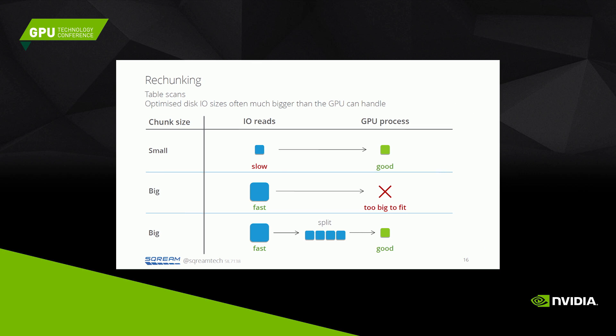We can also adjust chunk size in other ways. When reading data from disk, a chunk size that fits on the GPU will run well on the GPU but poorly on the hard disk because we're doing small reads. If we use a chunk size optimized for the hard disk, those chunks won't fit on the GPU. So we read the big chunk from disk, then split it into smaller chunks and operate on each one on the GPU one by one.